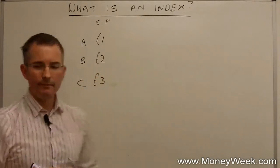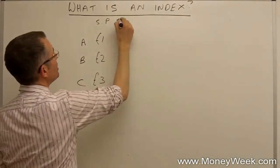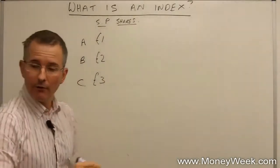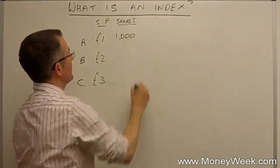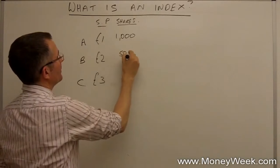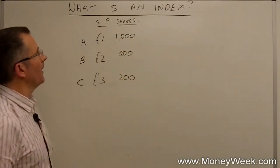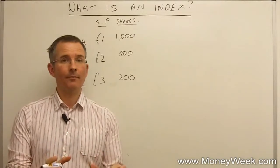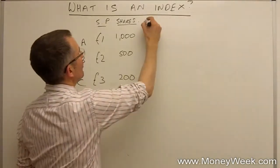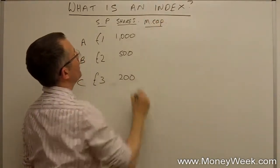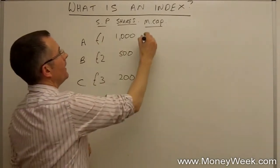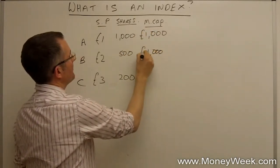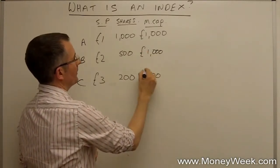The number of shares each company has in issue - they're slightly different sizes. Company A has a thousand shares in issue, company B has 500 shares, and company C has 200. From there we can work out market capitalization by taking the share price and multiplying by the number of shares. That gives us a thousand pounds for company A, also a thousand pounds for company B, and 600 pounds for company C.